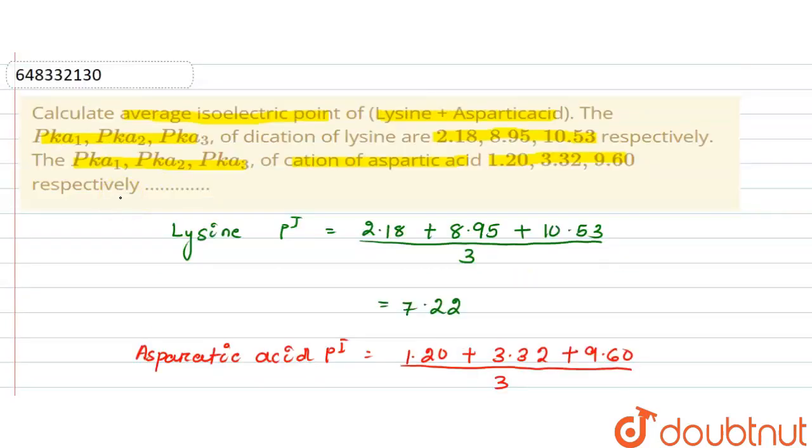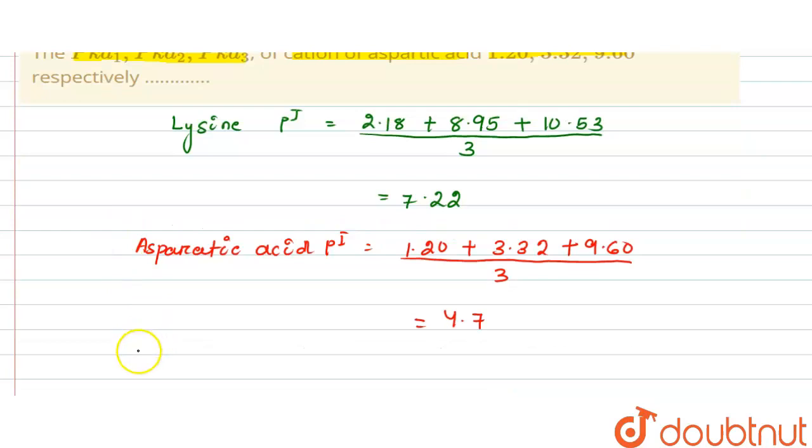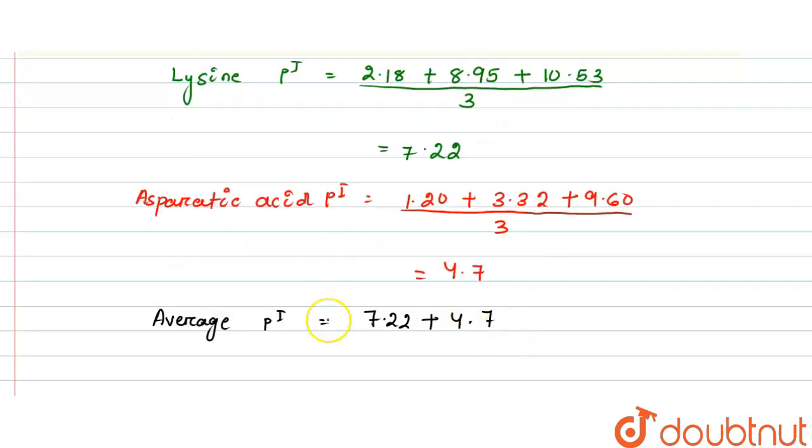So average pI value is 7.22 plus 4.72, that is lysine and aspartic acid, divided by 2 equal to 5.96, approximately equal to 6.